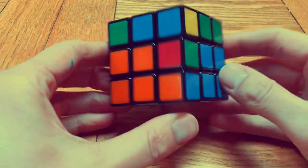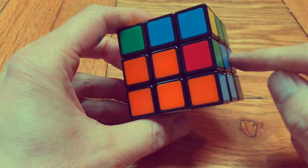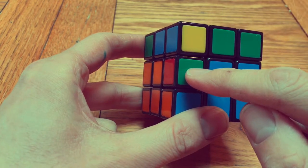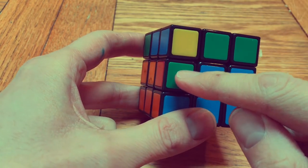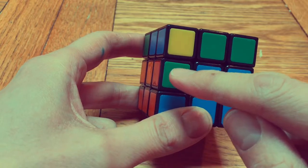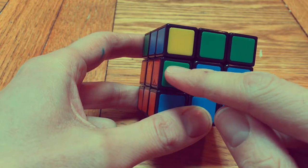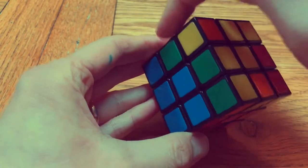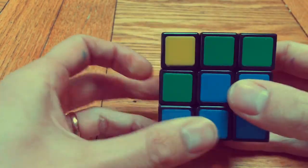Okay so when we're solving the middle layer you sometimes get a situation where a piece needs to go in the diagonally opposite place from where it's sitting. So for example here this piece needs to go all the way around there and this piece needs to go all the way back there. These two pieces need to be swapped.